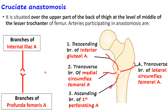This anastomosis will also provide collateral circulation if there is any block in the external iliac artery or femoral artery before the origin of the profunda femoris artery. The participating branches are: the descending branch of the inferior gluteal artery from the internal iliac, and from the profunda femoris artery — the transverse branch of the medial circumflex femoral and the transverse branch of the lateral circumflex femoral.